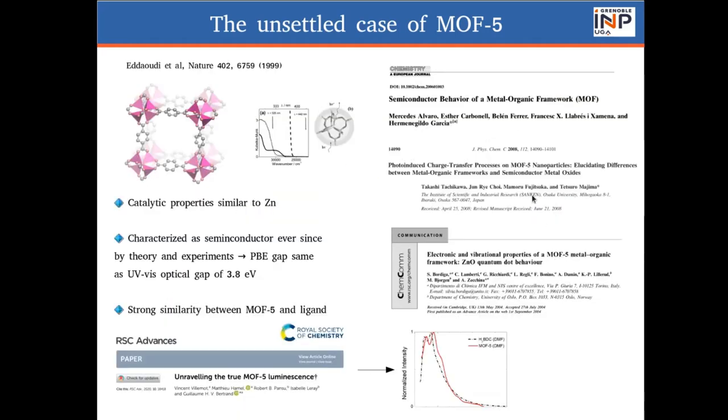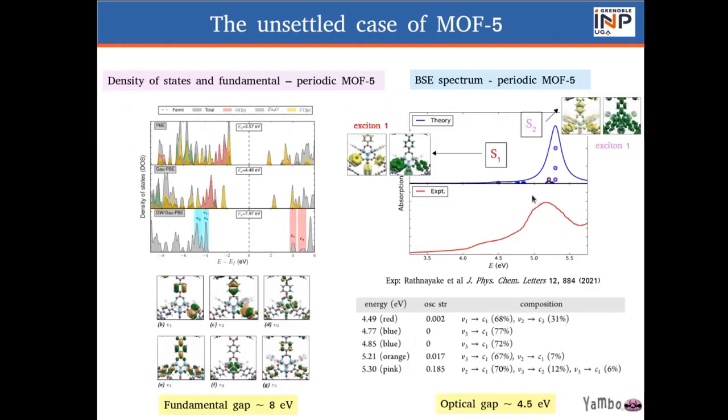We did compute, we wanted to settle this case, and we computed the GW and the BSE to find the optical gap and the fundamental gap. If we look at the left part first, this is the density of states. The DFT gap is reduced with PBE at 3.6 eV. With the GAUPBE, we found that GAUPBE, the PBE with the Gaussian attenuation for the Hartree-Fock exchange, and we see that we have an increase of the gap, and a huge increase when we go from GW to GAUPBE. And the fundamental gap is indeed 8 eV.